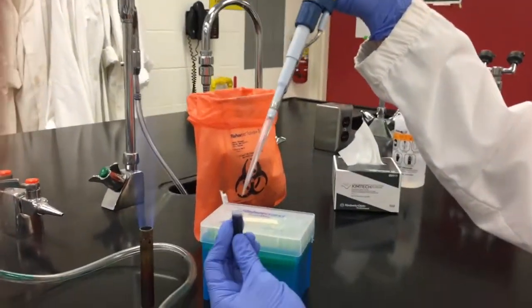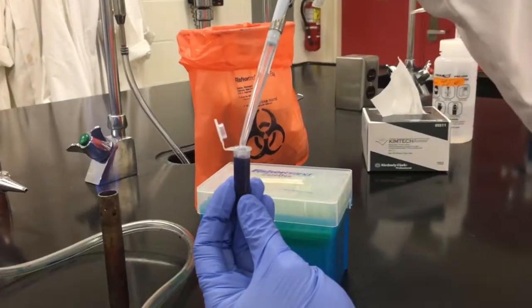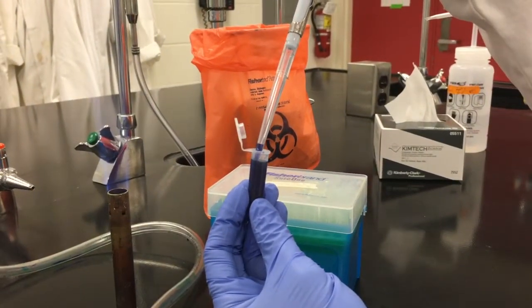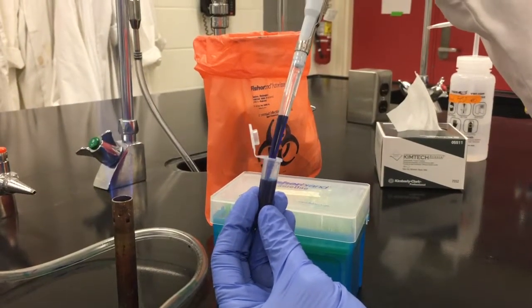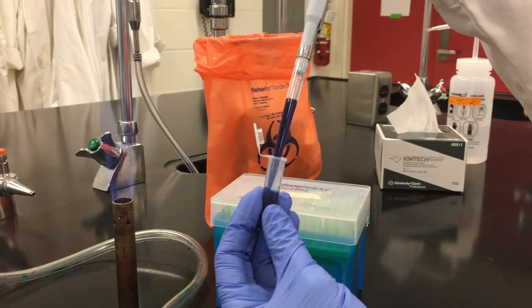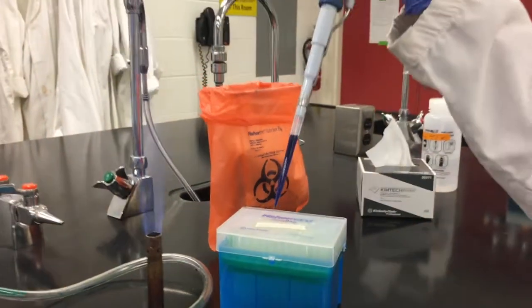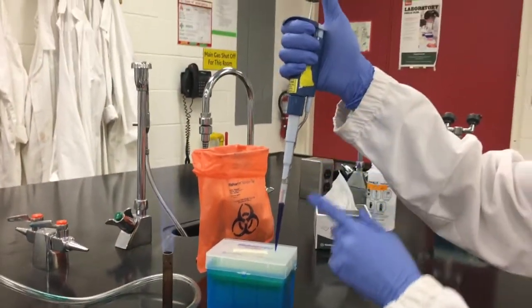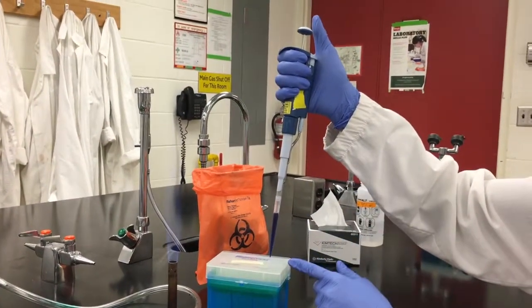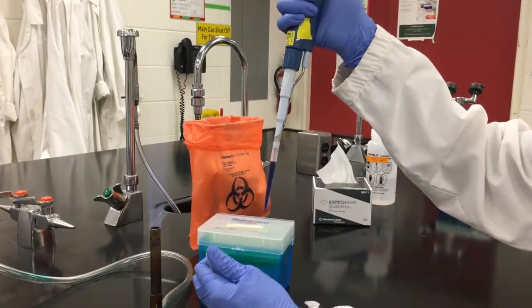Place a minimal amount of the tip into the liquid to be transferred to avoid sample loss to the outer part of the tip. Slowly release the plunger to draw up the liquid. Fast release of the plunger can cause air bubbles resulting in inaccuracy or splashing of the liquid into the pipette resulting in contamination and damage. Again maintain the pipette in an upright position so no liquid gets into the mechanisms of the pipetter.